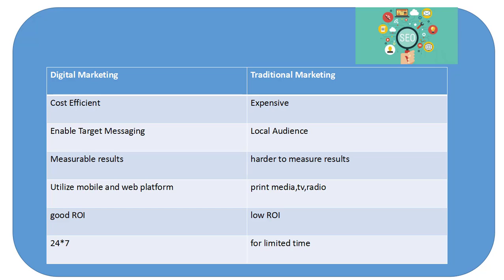There may or may not be potential customers in that local audience. Third, the results in digital marketing are measurable and easily available to the company using the platform, whereas in traditional marketing it is very hard to measure results. You cannot track where your investment is going, whether your ads are displaying, or whether you are getting good potential customers.